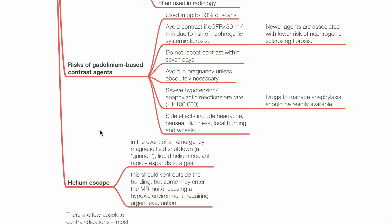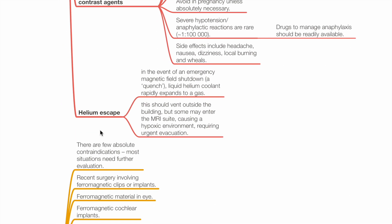Side effects of gadolinium include headache, nausea, dizziness, local burning, and wheals. Helium escape: in the event of an emergency magnetic field shutdown, liquid helium coolant rapidly expands into a gas. This should vent outside the building, but some may enter the MRI suite, causing a hypoxic environment requiring urgent evacuation.